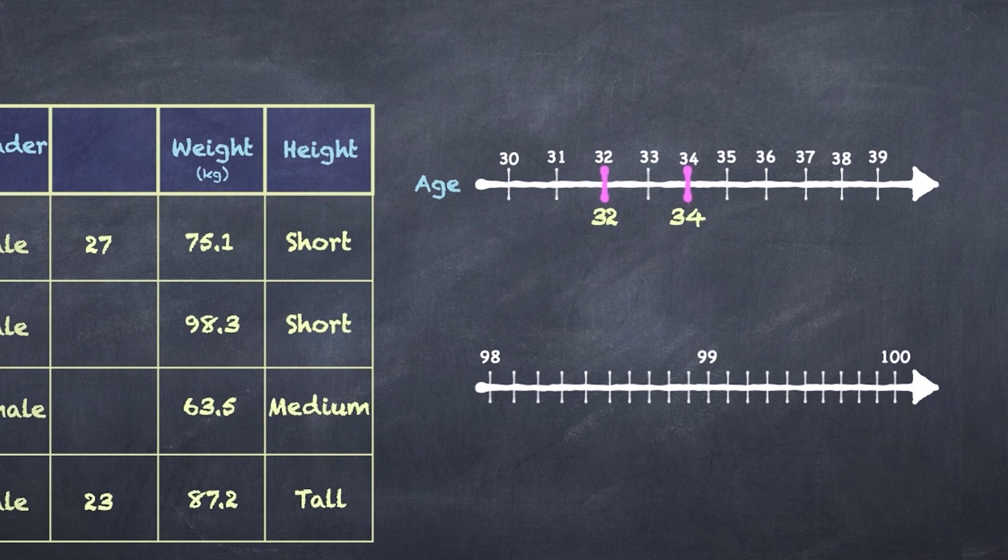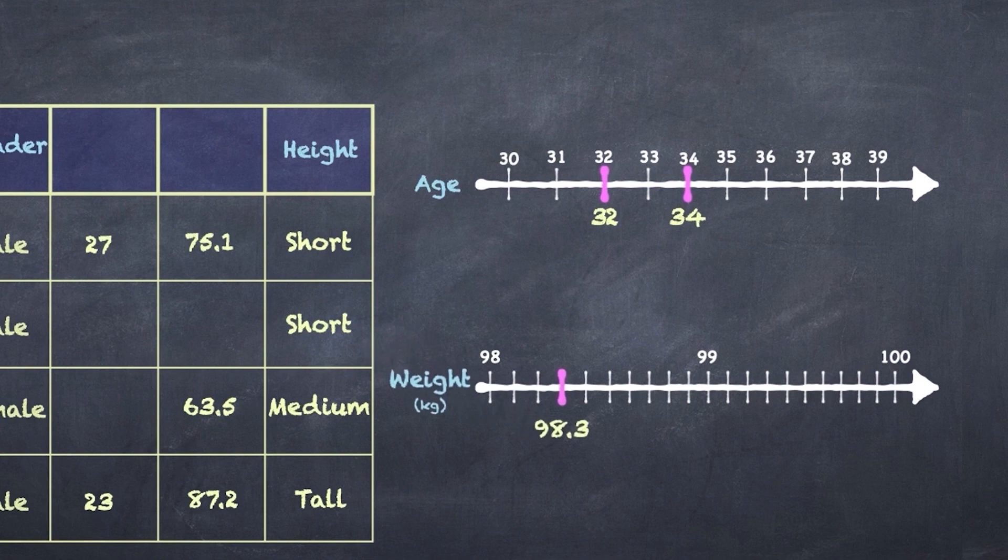Let's talk about age. Age is typically given as a discrete variable. In other words, each observation falls definitively on a value on the integer number line: 32, 33, 34, etc. Weight by contrast falls on any number including fractions between two integers. So in this example, Barra is 98.3 kilograms.